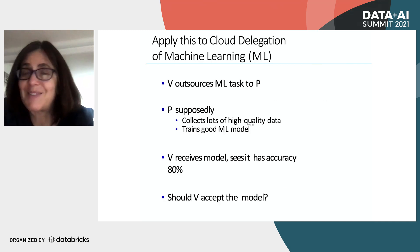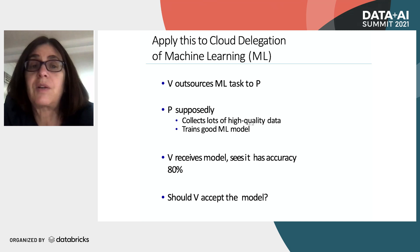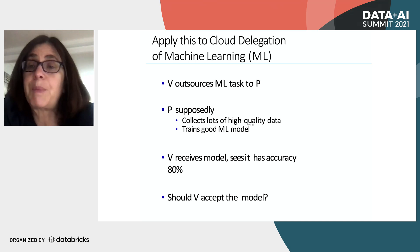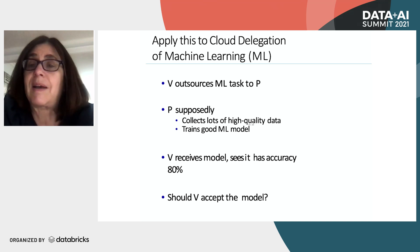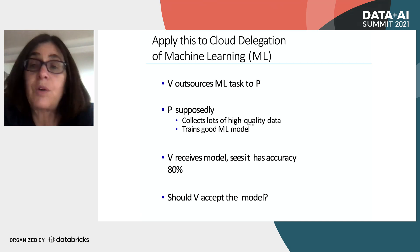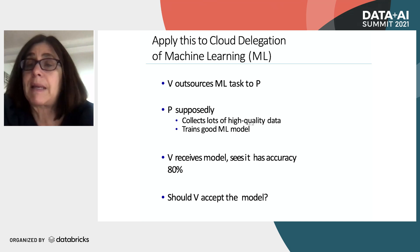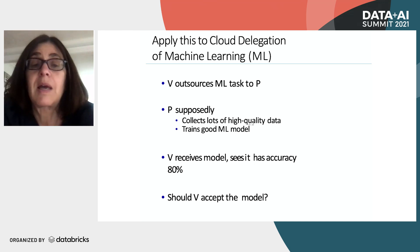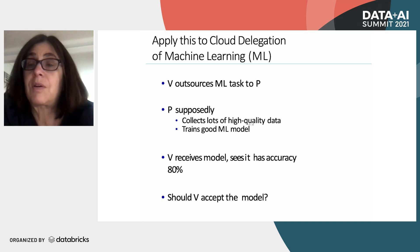Let's apply this mathematics to cloud delegation of machine learning. I'm a verifier; I go to a prover — which might be a company — and say: here's my task, I want you to develop a program that does bail without cash using historical data, or gives loans to applicants, or accepts people to school, or decides whether content posted to YouTube contains pornography. The prover, who's the cloud with lots of computational power, trains a good machine learning algorithm and returns it. The verifier checks the model on some random data and sees it has 80% accuracy — but is 80% the best you can get?